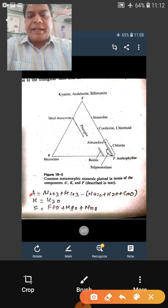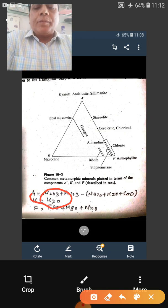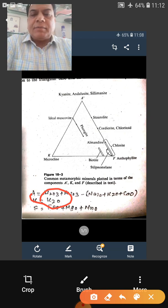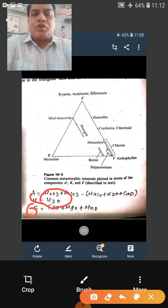Secondly, here it is K, K means it is K2O and similar to that in ACF diagram, F is your FeO plus MgO plus MnO.